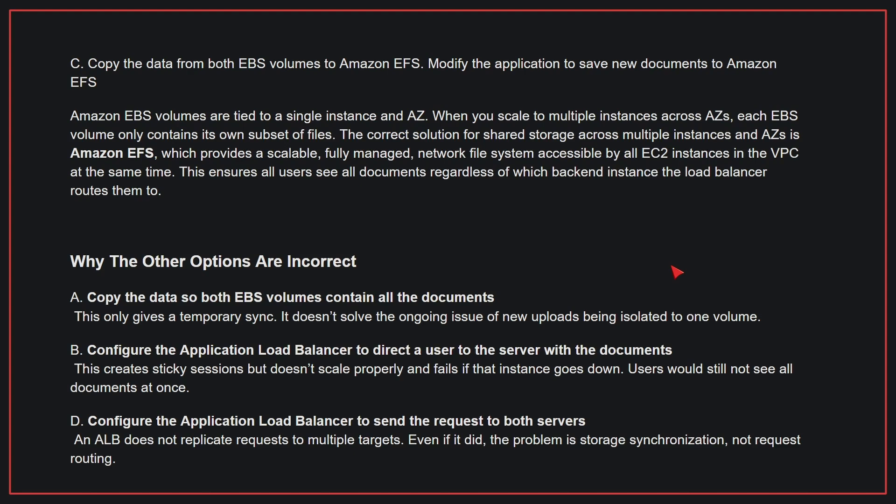Why the other options are incorrect: A — Copying data so both EBS volumes contain all documents only gives a temporary sync; it doesn't solve the ongoing issue of new uploads being isolated to one volume. B — Configuring the application load balancer to direct a user to the server with the documents creates sticky sessions but doesn't scale properly and fails if that instance goes down. D — An ALB does not replicate requests to multiple targets; even if it did, the problem is storage synchronization, not request routing. Therefore, the correct answer is C.